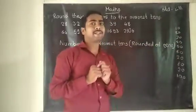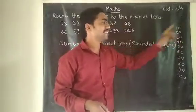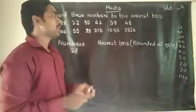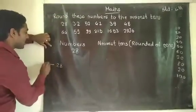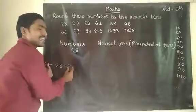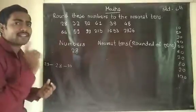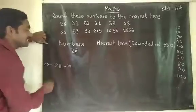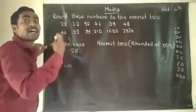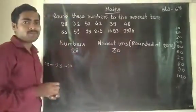Twenty-eight is in between twenty and thirty — between two tens and three tens. So which is the nearest tens to twenty-eight? Twenty-eight is between twenty and thirty. Twenty-eight is closer to thirty, so the nearest tens number is thirty. The answer is 30. The number twenty-eight rounded off to the nearest tens is thirty.